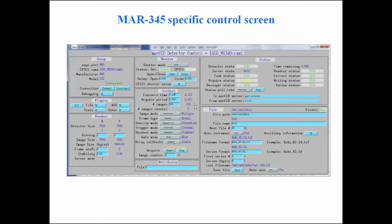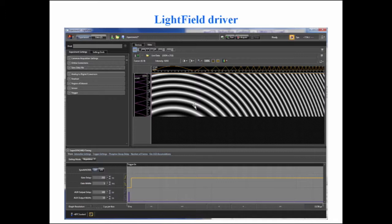This is the MAR345-specific screen with a different set of specific parameters. We try our best to make the file saving controls look the same regardless of which detector you're using, though there are some differences — for example, the MAR345 server has a hard-coded file numbering scheme.